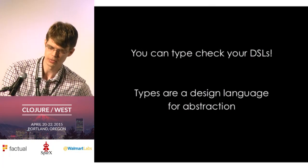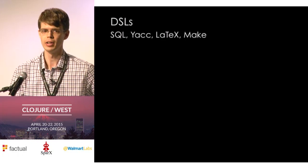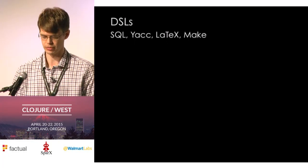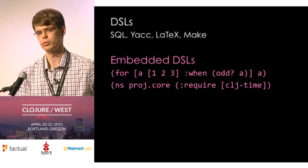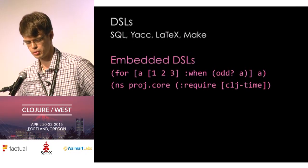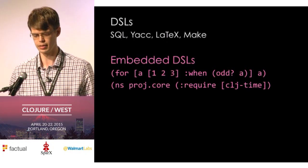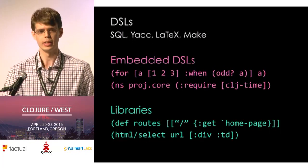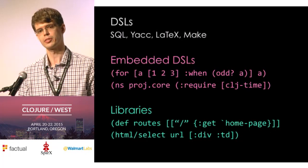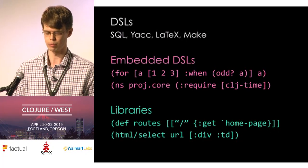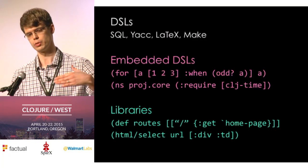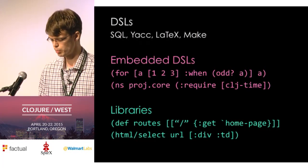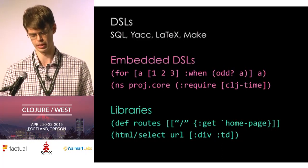I want to be quite generous in what I mean by domain-specific. We have brand-name DSLs like SQL or make — external tools we use to do a specific job. We also have embedded DSLs; macros in Clojure let us do list comprehensions or have namespace forms. And when you're working with a library like Pedestal or Enlive, you're manipulating abstractions specific to a particular domain even without macros involved.